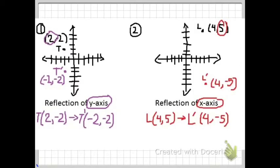These are some examples. First, point T is at (2, 2) and it will reflect over the y-axis. The answer would be T equals (negative 2, 2), because the 2 will reflect on the y-axis, so it will be (negative 2, 2).